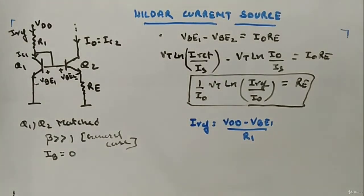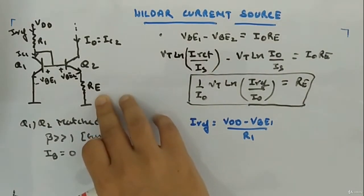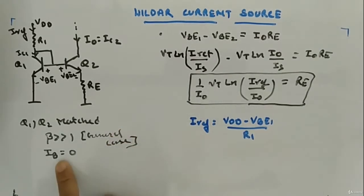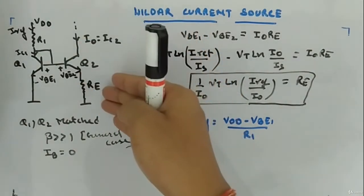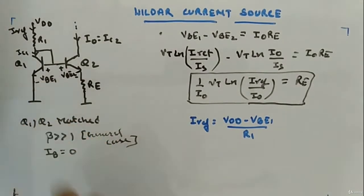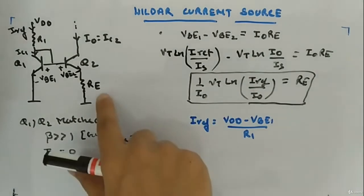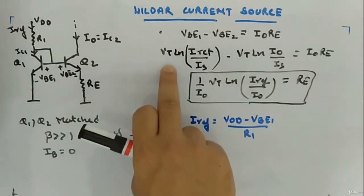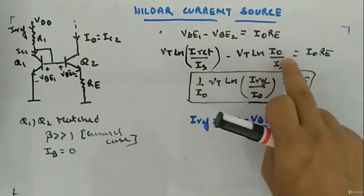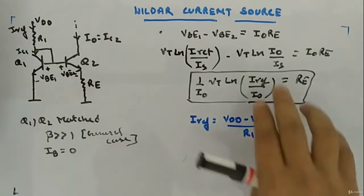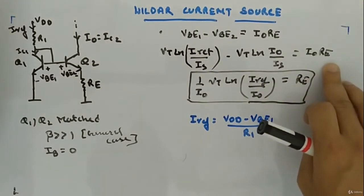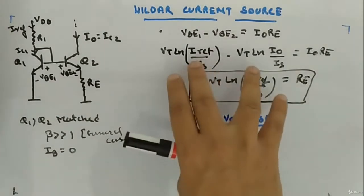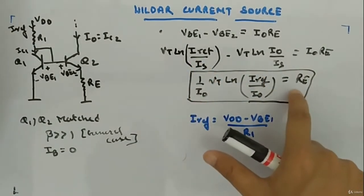Let's look at the Widlar current source. Q1 and Q2 are matched; we assume beta is very much greater than 1, which is the general case, so Ib will be 0 for both transistors. Since Ib is 0, I0 current flows through RE as well. Writing KVL: VBE1 minus VBE2 equals I0·RE. Expressing VBE2 in terms of current gives VT·ln(Iref/IS) minus VT·ln(I0/IS), which simplifies to VT·ln(Iref/I0), since IS cancels.